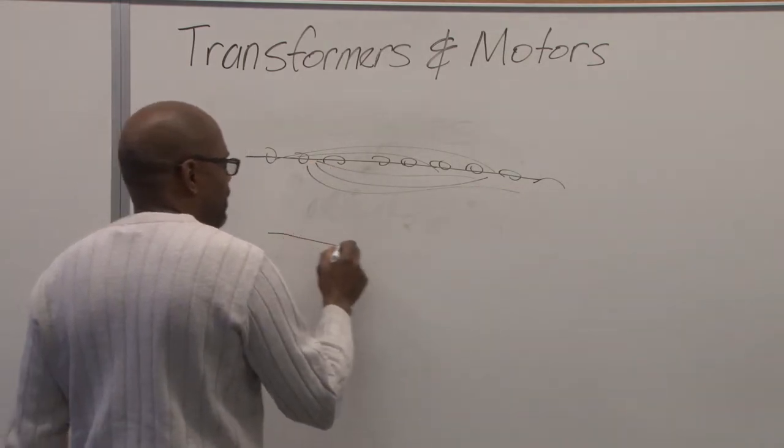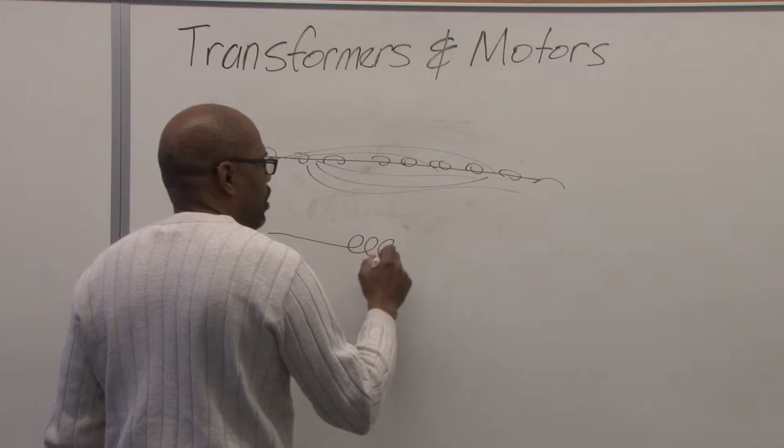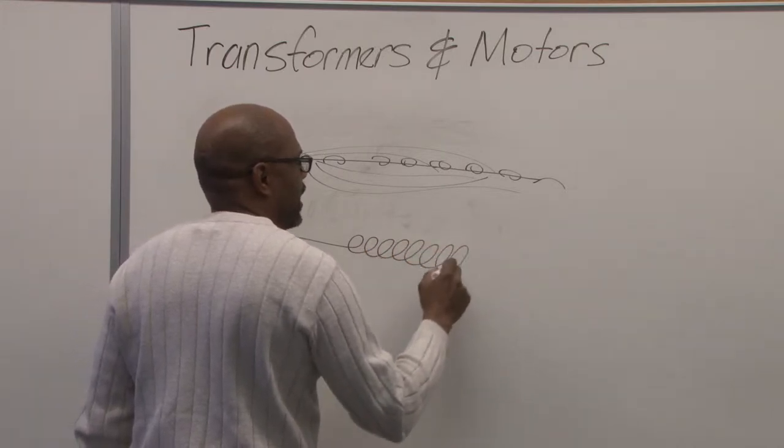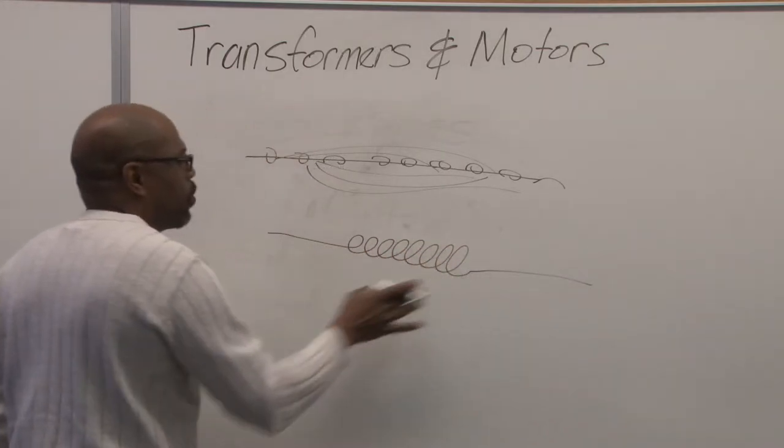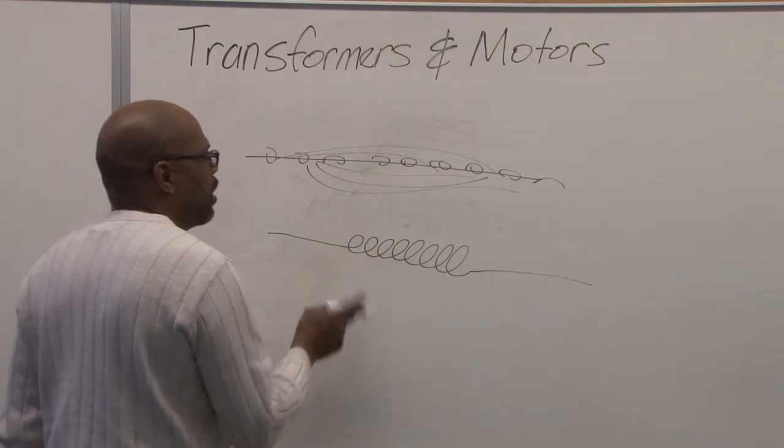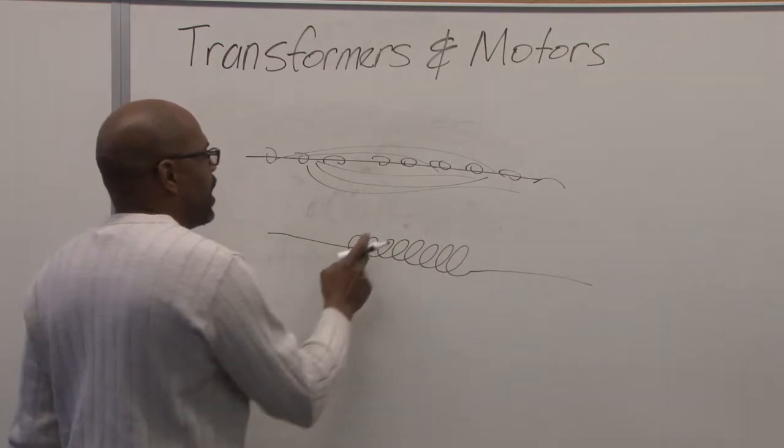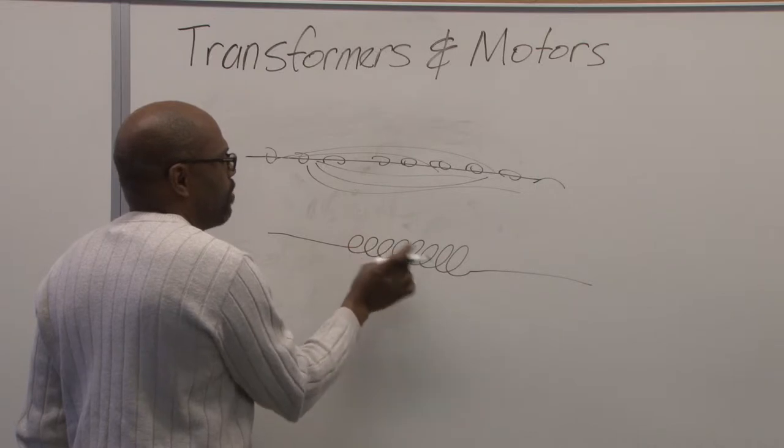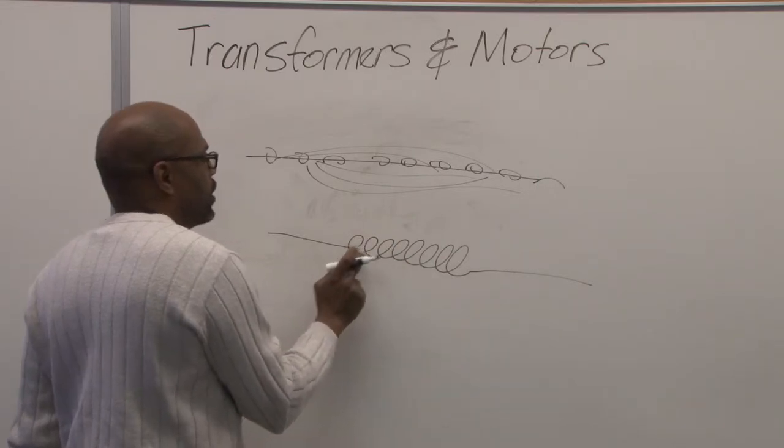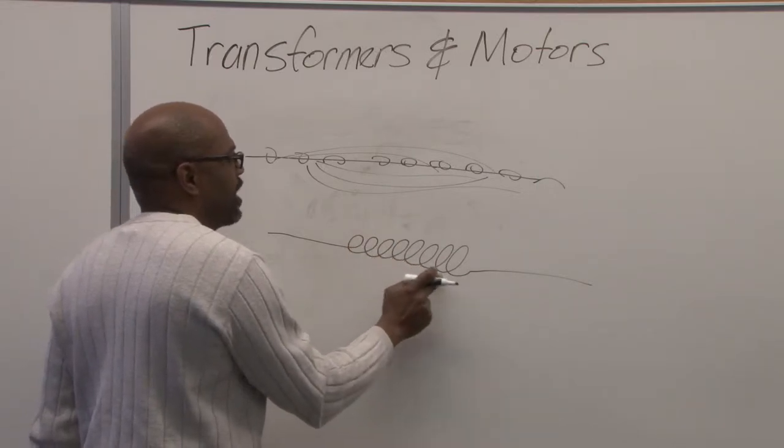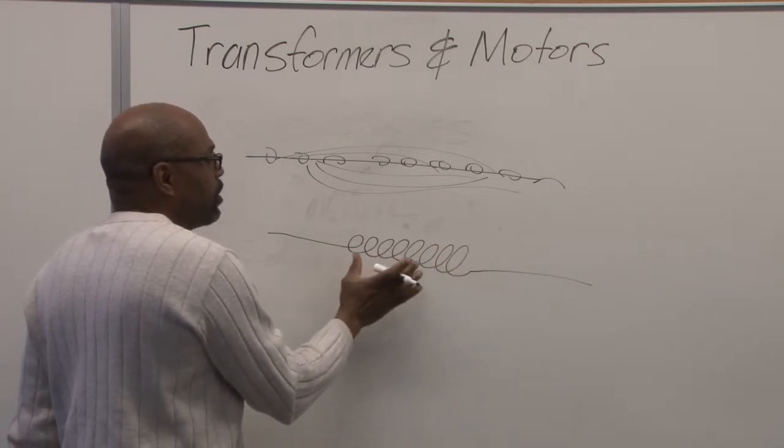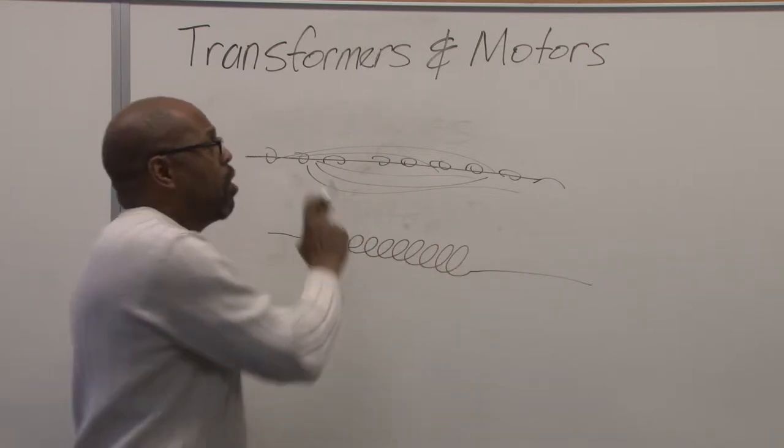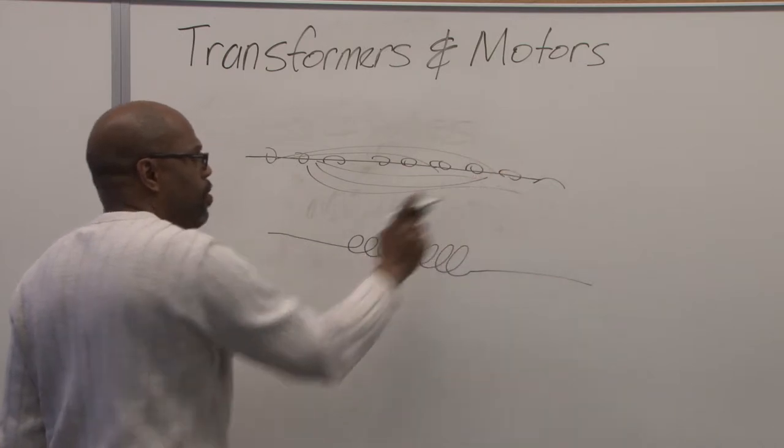But if we take the same wire and we put it into a coil, we are multiplying that magnetic field around it. It becomes stronger because we are multiplying the current in a small space. So in this case, we have one, two, three, four, five, six, seven, eight coils or turns. So it will be eight times stronger than having a single wire.